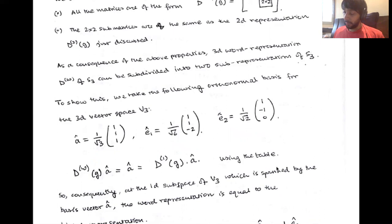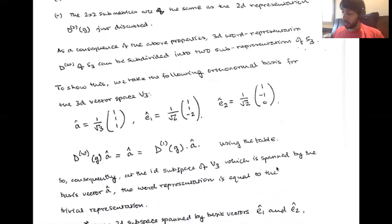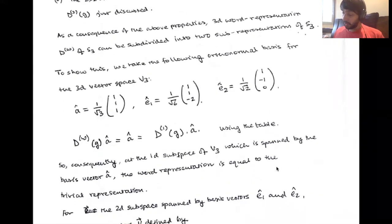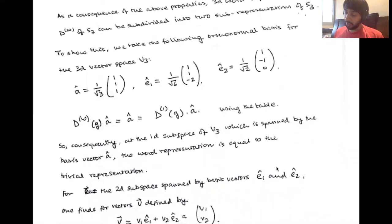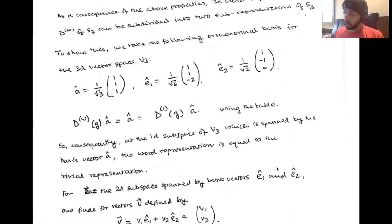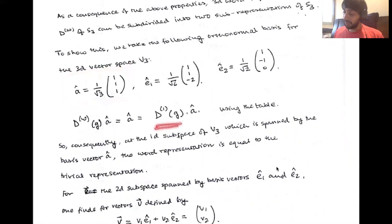What is going to happen is — you can use what we have upstairs to show that D-W acting on A equals A, and this is also equal to D1 of G. So this is something you can explicitly show. On this one-dimensional subspace of V3 spanned by the vector A, the word representation is equivalent to the trivial representation.